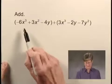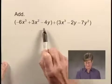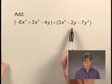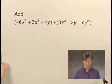In this exercise, we're going to add two polynomials. We have negative 6x cubed plus 3x squared minus 4y plus 3x cubed minus 2y minus 7y squared.